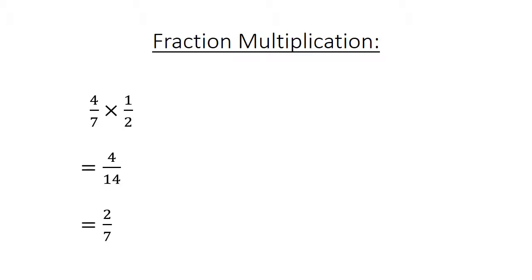Fraction multiplication equals 2 over 7. Fraction division. 4 over 7 divided by 1 over 2 equals 4 over 7 times 2 over 1 equals 8 over 7, equals 1 and 1 over 7.